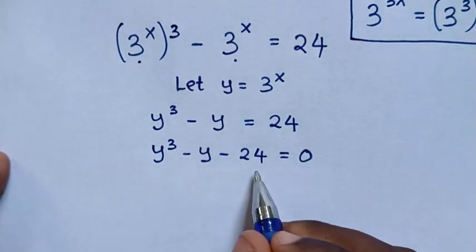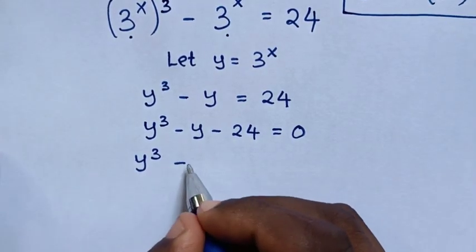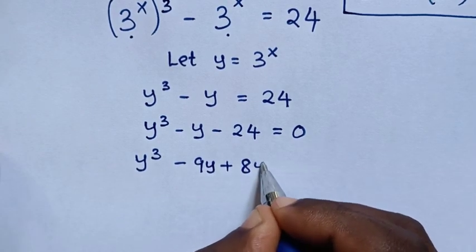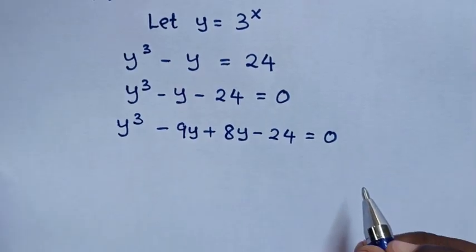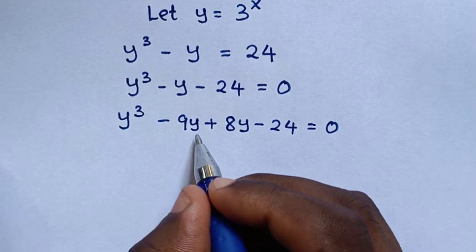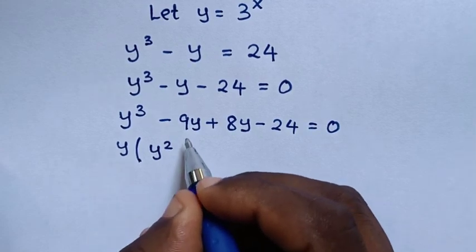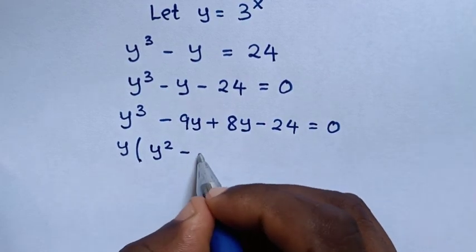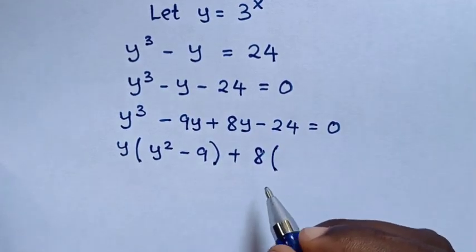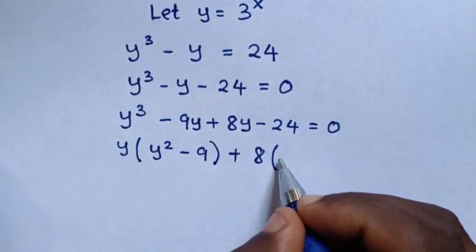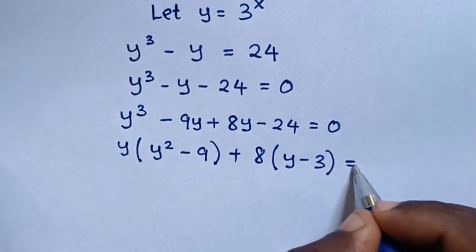Then we'll factorize this cubic equation. From y power of 3, negative y is the same as negative 9y plus 8y, then minus 24 is equal to 0. Then in the next step, y is common, so we take y out of bracket: y power of 3 divided by y is y squared, negative 9y divided by y is negative 9, bracket. Plus, 8 is common, so we take 8 out of bracket: 8y divided by 8 is y, negative 24 divided by 8 is negative 3, bracket, is equal to 0.